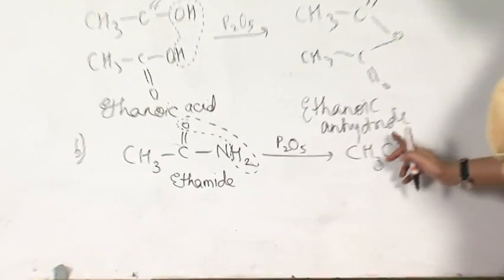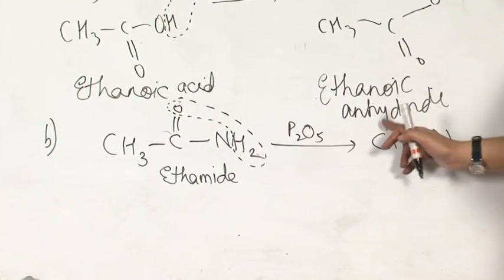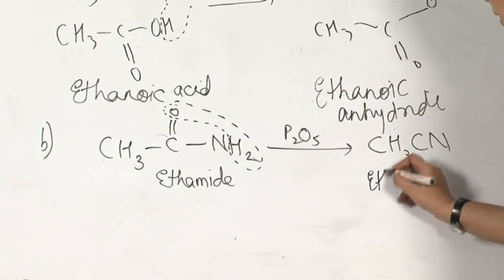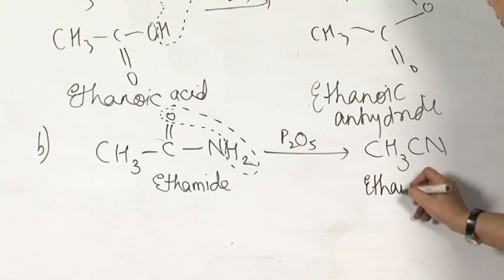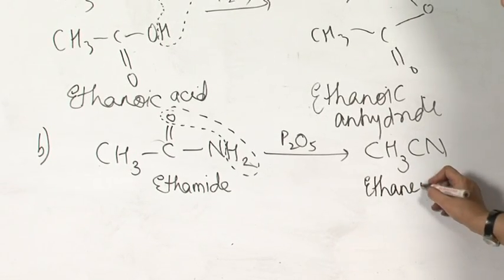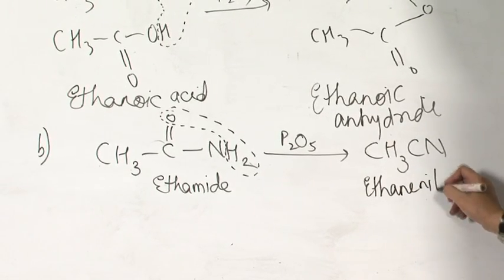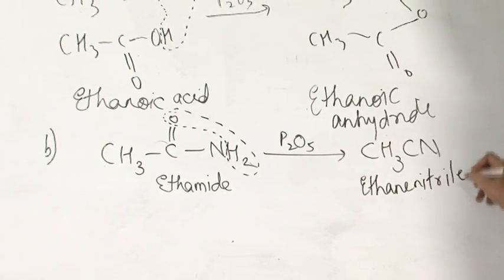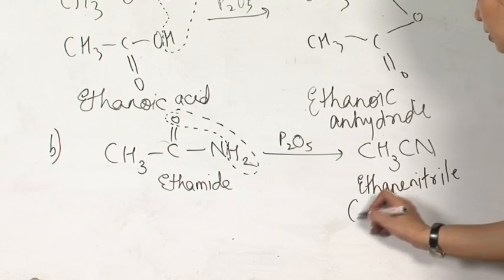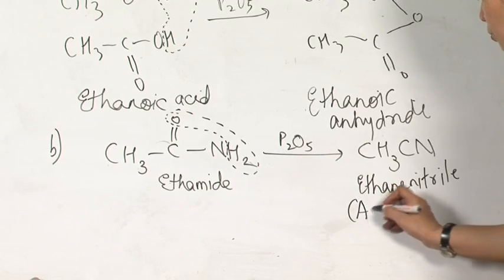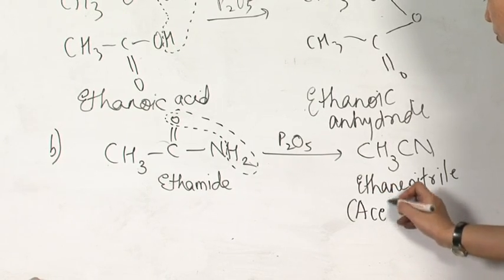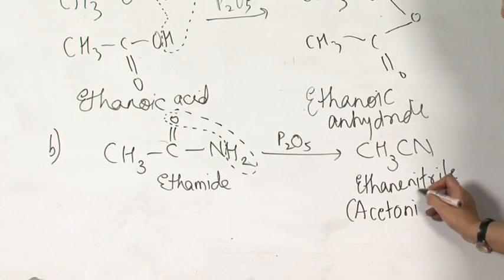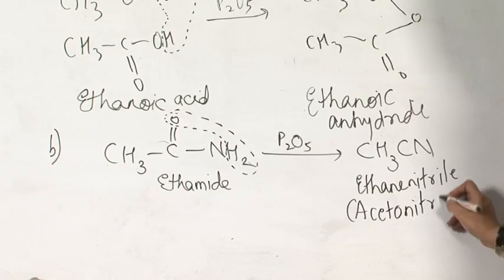Two carbon atoms: one, two. So the name is ethanenitrile. There is one more common name for this that is generally used. This is also called acetonitrile.